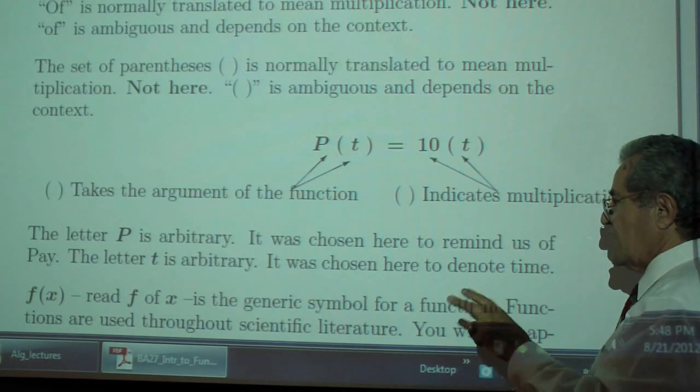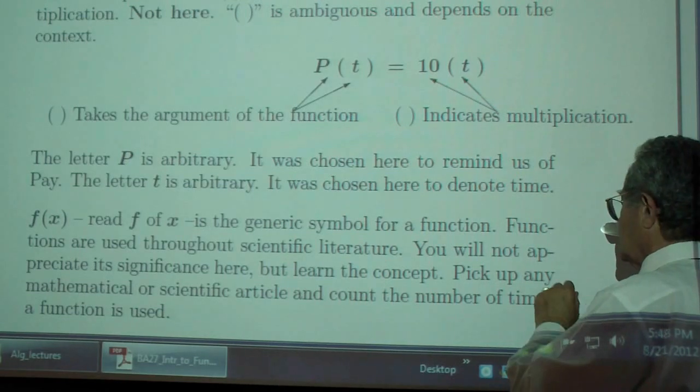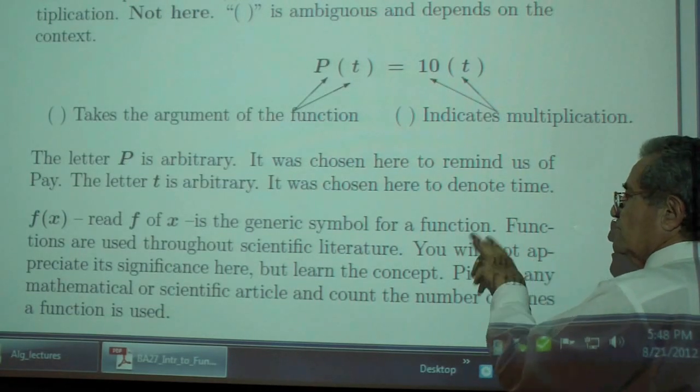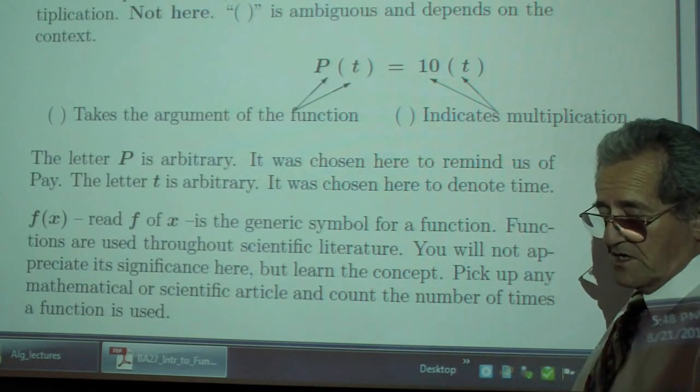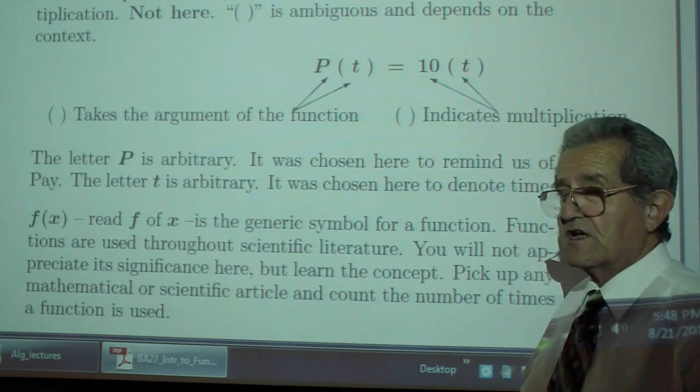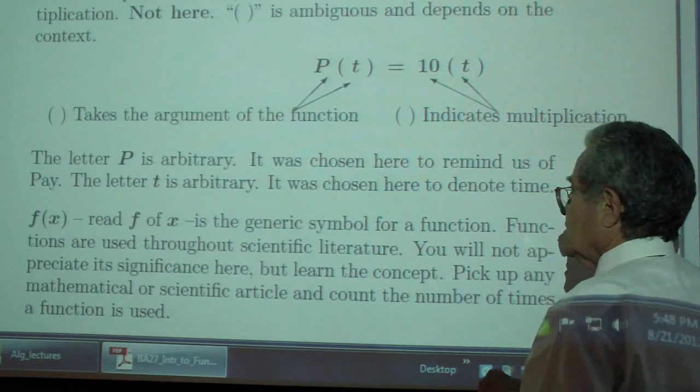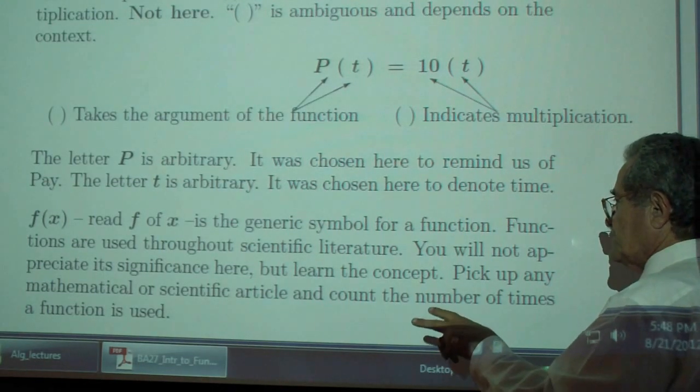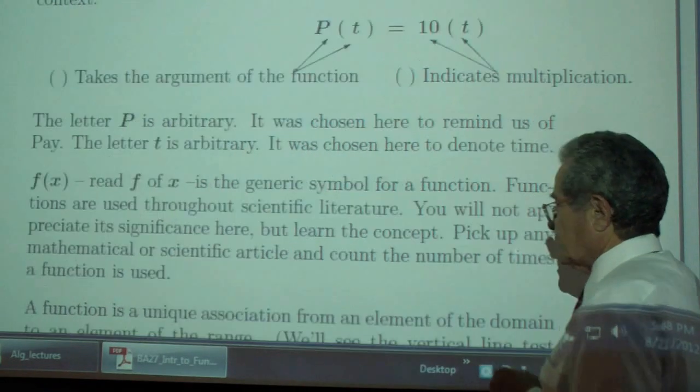F of X, read F of X, is a generic symbol for a function. Functions are used throughout scientific literature. Pick up a scientific magazine. Pick up a scientific book. See how many functions are in there. You will not appreciate the significance here, but learn the concept. Okay. Pick up any books.